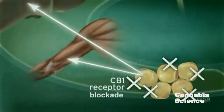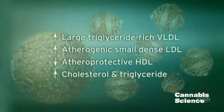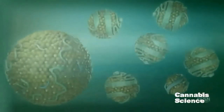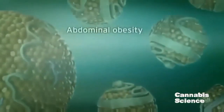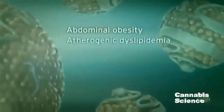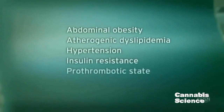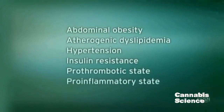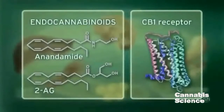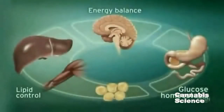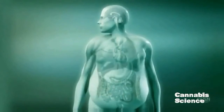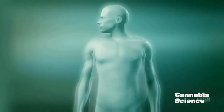Metabolic dysregulation leads to a constellation of symptoms including abdominal obesity, atherogenic dyslipidemia, hypertension, insulin resistance, prothrombotic state, and pro-inflammatory state. As basic and clinical research progresses, we will continue to increase our understanding of the central and peripheral endocannabinoid system and its role in the regulation of metabolic function.